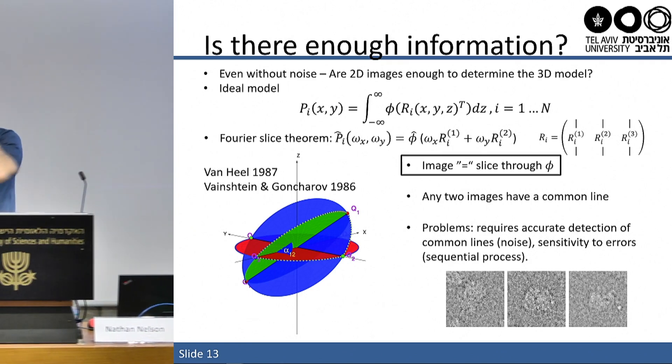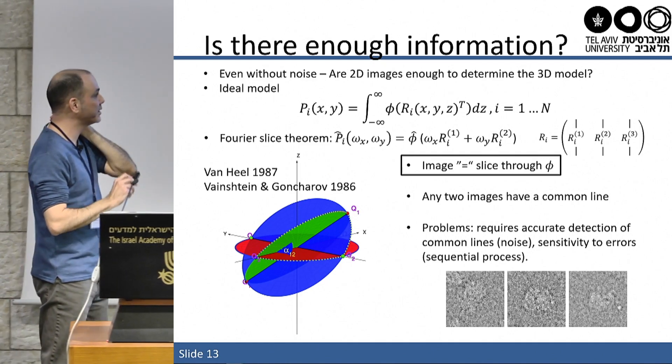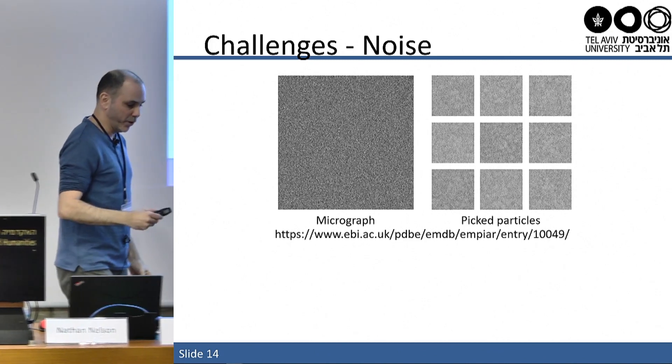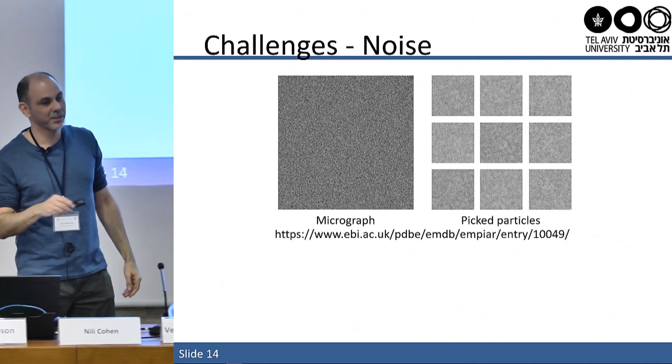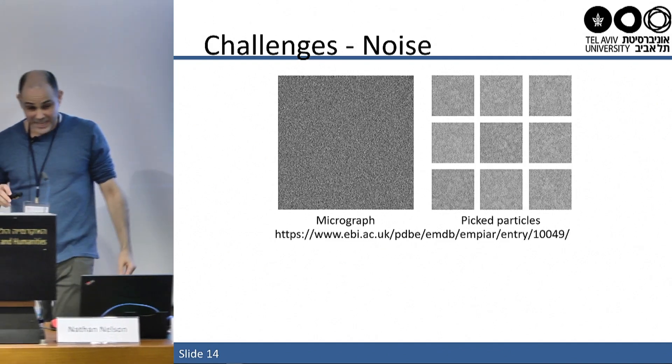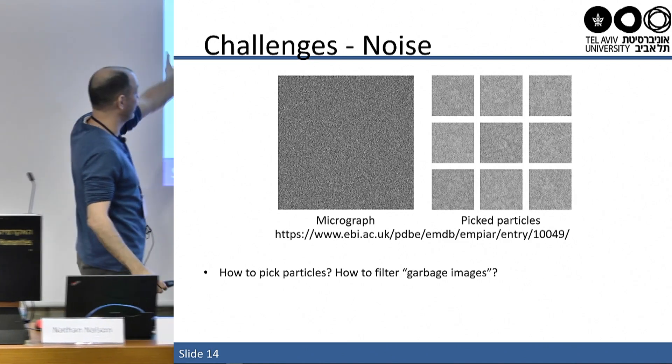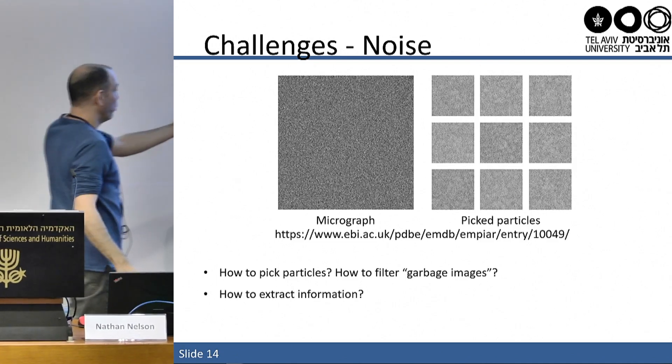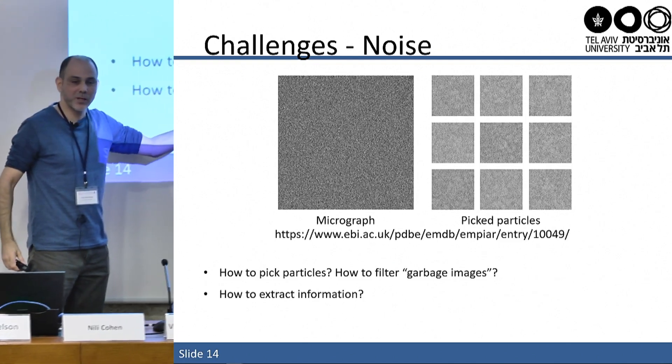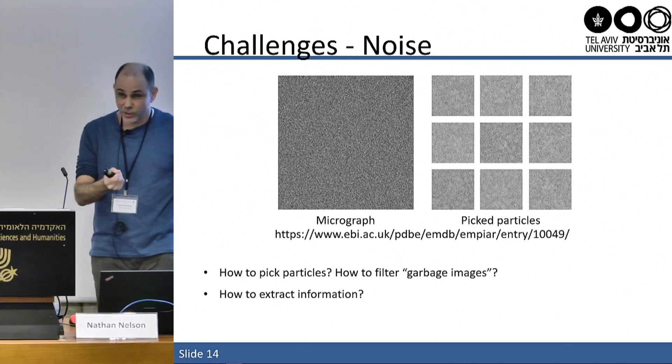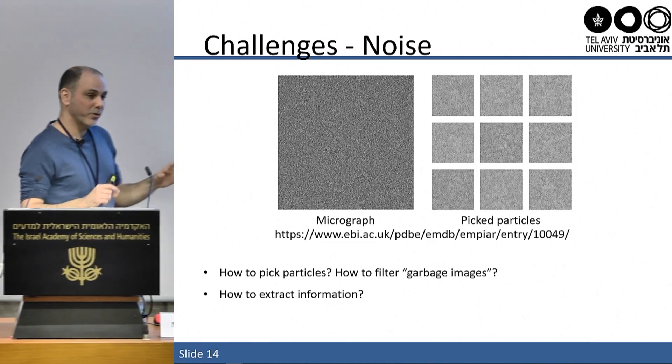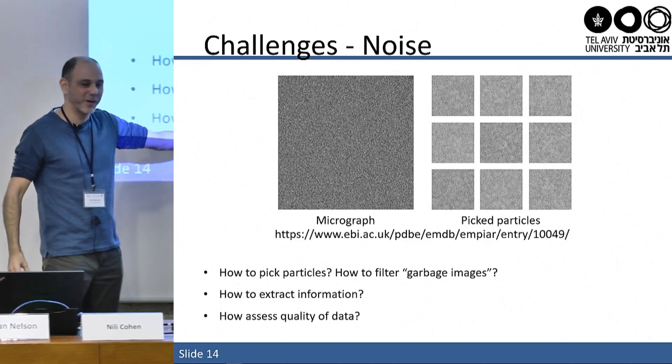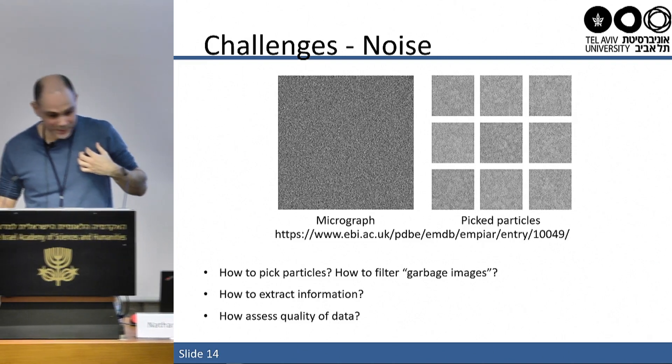But this is in principle, because the images are noisy, and the method I just explained requires accurate detection of common lines. And if you mess up the first three images, we are reconstructing garbage. But at least we know the model, and we know that there is enough information. Now let me tell you what I think the three main challenges of the field, at least from a mathematical point of view. So the first one is obviously noise. The images are terribly noisy to the point that almost all algorithms we know from classical image and signal processing are useless. So we need to come up with new things. And some problem we would like to solve is how to pick particles where images are that noisy, how to get rid of junk. How to extract information from the images. We know that there is always some detection limit. Is there a detection limit? Can we go around the detection limit? In some cases, yes. Or even a simple question, what's the quality of my data? Should I stop the microscope? So the first challenge is noise.